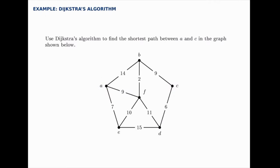To do this algorithm we're going to start with a, and it kind of radiates out from there. Starting with a, we're going to visit its neighbors and move outward in sort of concentric rings until we reach c. The way this works is we start by putting a distance at each node. The distance at a is zero because we're starting at a, so the distance to get there is zero. Then everywhere else we put infinity.